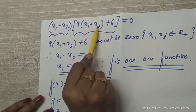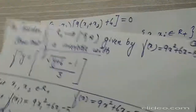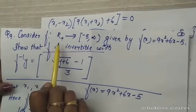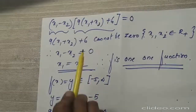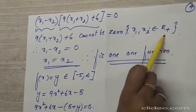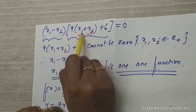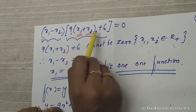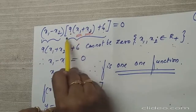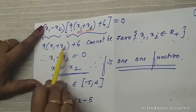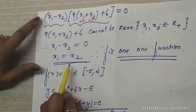Since x₁ and x₂ belong to the positive real numbers — as mentioned in the question, the domain is the collection of positive real numbers — x₁ and x₂ are both positive. So their sum is positive, and 9(x₁ + x₂) + 6 is always positive and cannot be zero. Therefore x₁ - x₂ = 0, giving us x₁ = x₂.